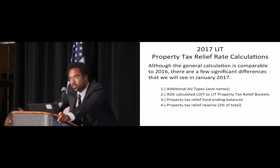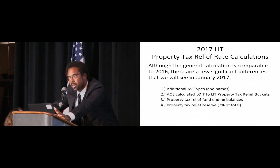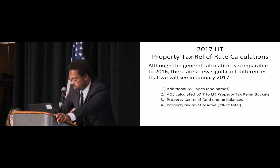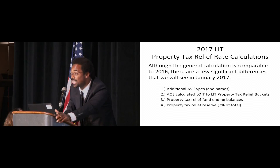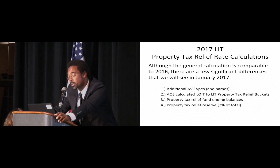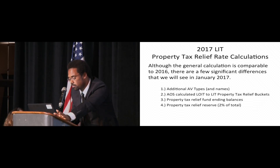The first difference: where last year the three options for property tax relief were everyone, homestead, and qualified residential, this year we'll be using new LIT designations instead. So we'll be using the new LIT terminology as we're calculating the property tax relief rates, rather than using the old ones.